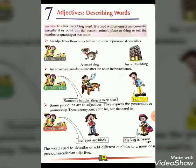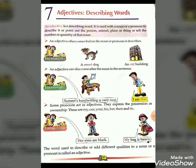An adjective often comes before the noun or pronoun it describes. For example, 'a smart dog' — here the word 'smart' is the adjective. Next example: 'an old building' — here the word 'old' is the adjective.